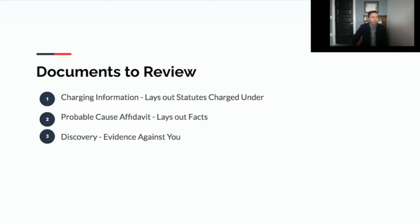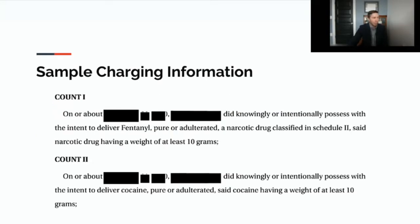So here is an example of a charging information. Here, you can see count one, the state alleged on or about a certain date. This person did knowingly or intentionally possess with the intent to deliver fentanyl, pure or adulterated, which is a narcotic drug classified in Schedule 2, and a weight of at least 10 grams. So here, they're charging that the person had the narcotic fentanyl in an amount over 10 grams, which, pursuant to the chart we showed earlier, is a level 2 felony, which that person could then be facing potentially 10 to 30 years imprisonment. And you can see just count two. This is different. They're charging the person allegedly had cocaine as well, so they're charging them as well for a level 2 under the cocaine statute.